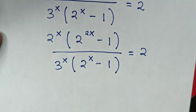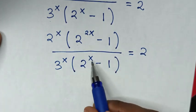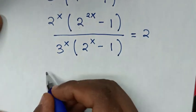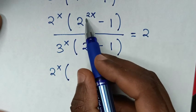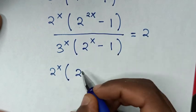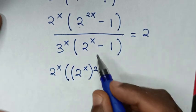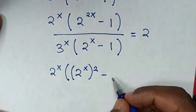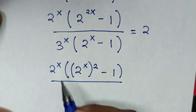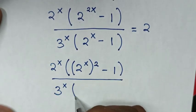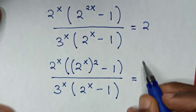In the next step, we factor 2^(2x) minus 1. This is in the form of a perfect square difference, so we apply the rule a² minus b² equals (a+b)(a−b). So 2^(2x) minus 1 becomes (2^x plus 1)(2^x minus 1). Our equation becomes 2^x times (2^x plus 1)(2^x minus 1) over 3^x times (2^x minus 1), equals 2.